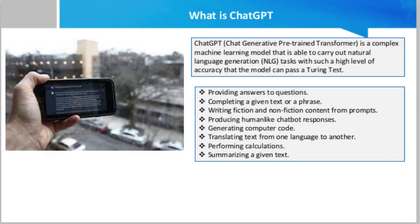ChatGPT was trained on a massive amount of unlabeled data scraped from the internet before 2022. The model is continually being monitored and fine-tuned for specific language-oriented tasks with additional datasets labeled by humans.